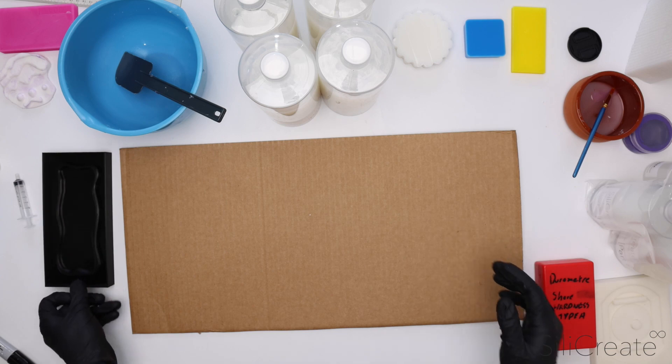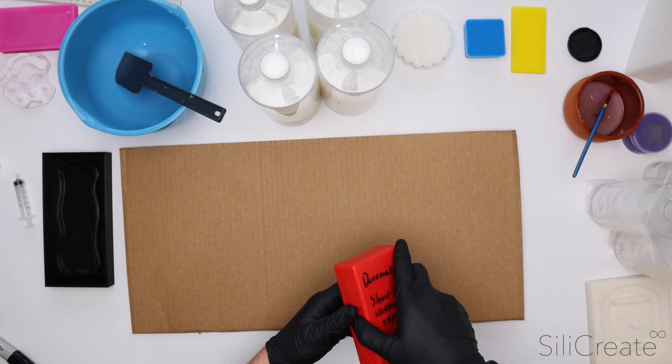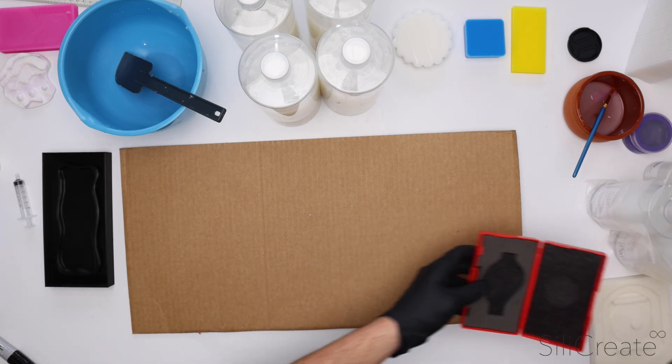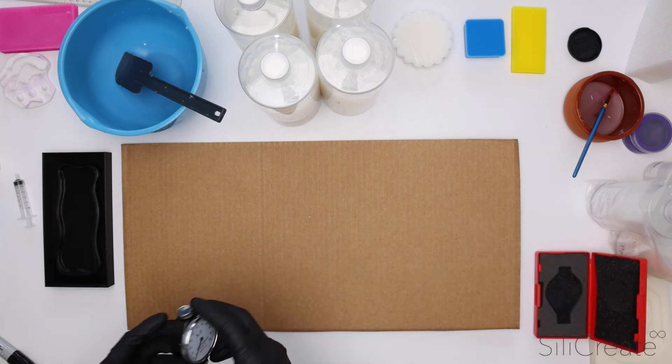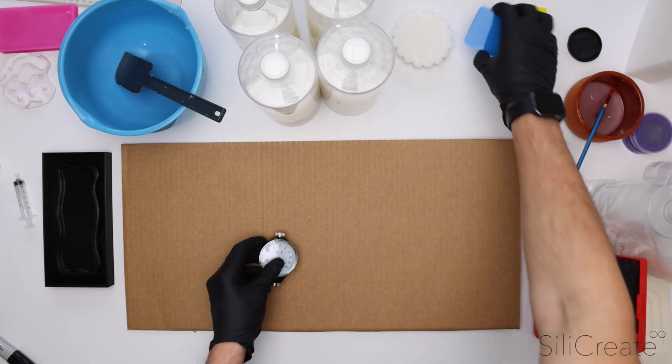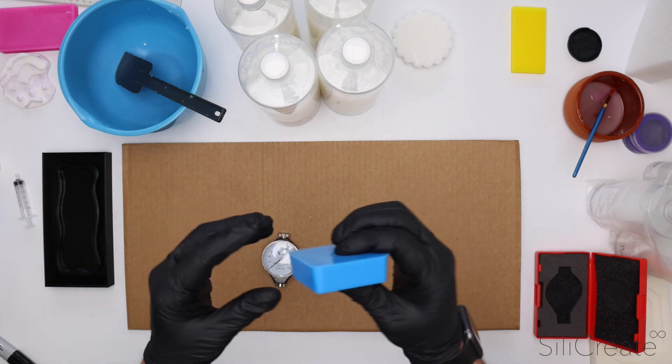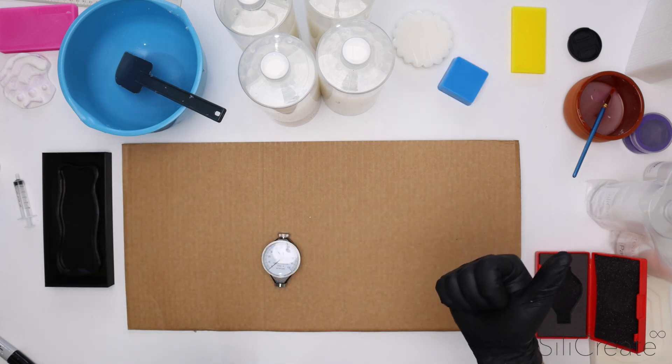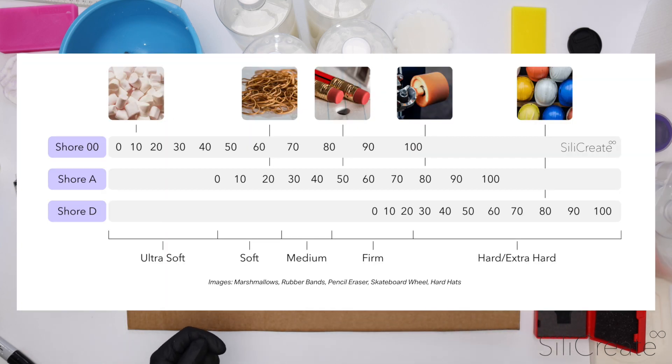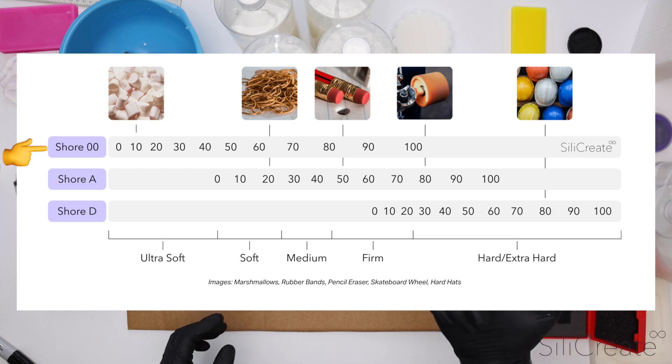I guess quickly we should talk about measuring this just to show you what we mean when we talk about shore hardness. Briefly, shore hardness is just the measure of the resistance of a material to indentation, so it's just how much the material gives when you apply pressure. There's three different scales for measuring shore hardness: the A scale, the double zero scale, and the D scale.